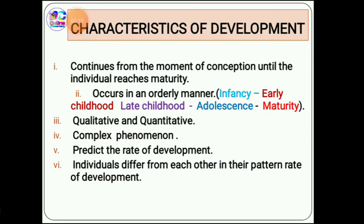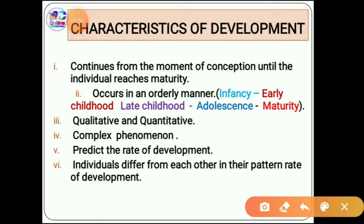Now we are going to see the characteristics of development. The first characteristic is that development is continuous — from the moment of conception until it reaches maturity. The second is that it is orderly: it cannot be out of order. It progresses from infancy, to early childhood, to late childhood, to adolescence, and ultimately to maturity — a sequence that must be followed.